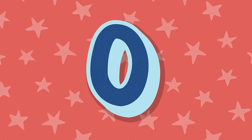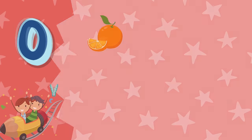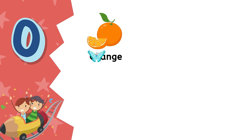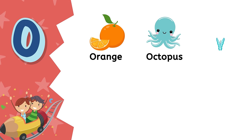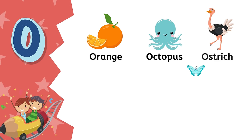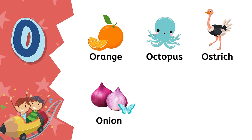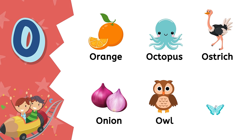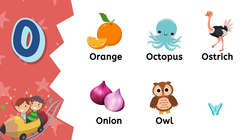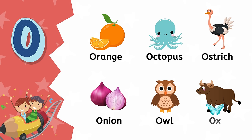O. O is for orange. O is for octopus. O is for ostrich. O is for onion. O is for owl. O is for ox.